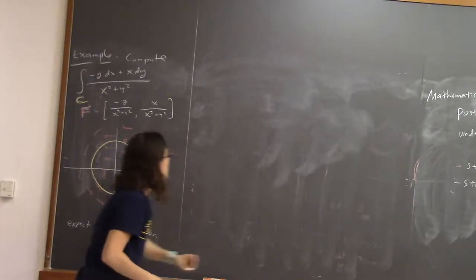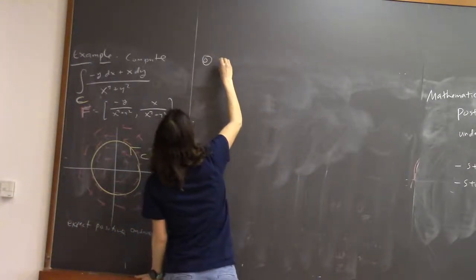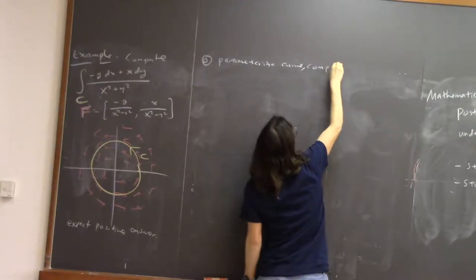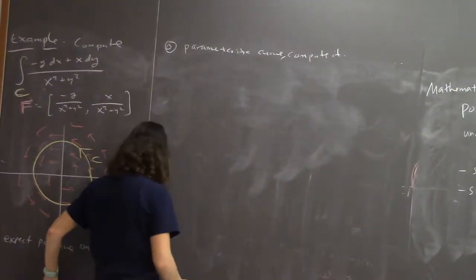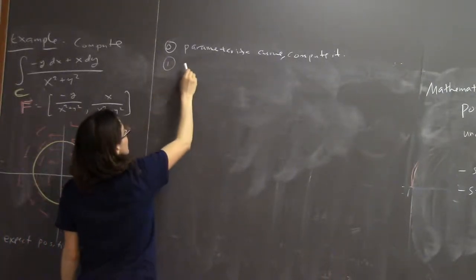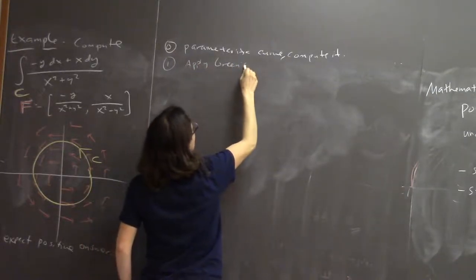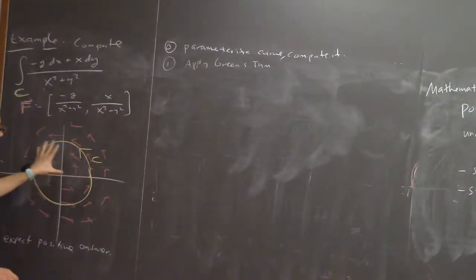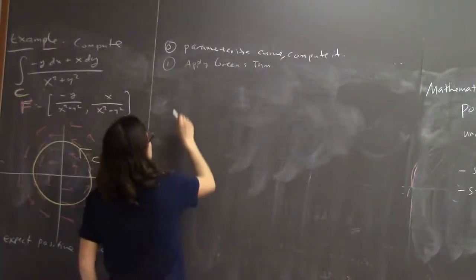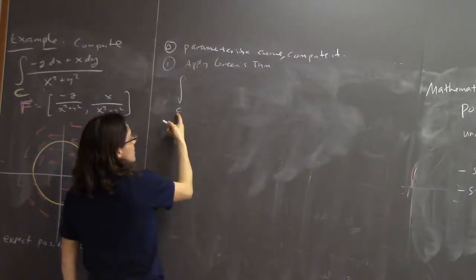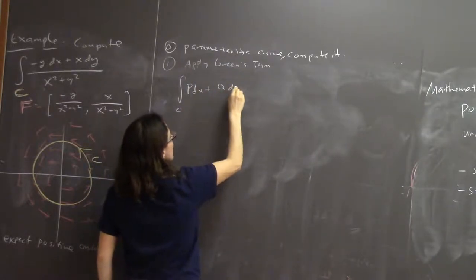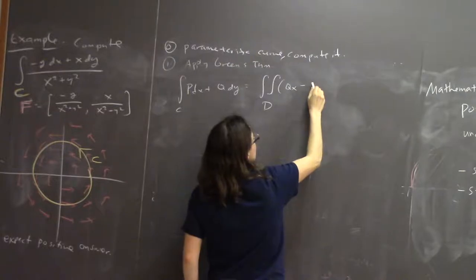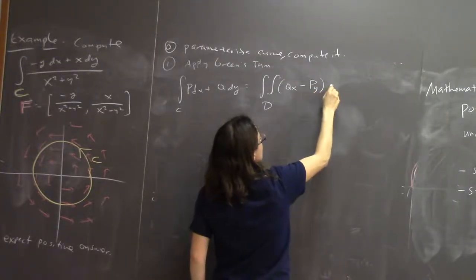One way we could do this is option zero: just parameterize the curve and compute it. But another thing you could do is apply Green's theorem. Green's theorem says that if you have an oriented curve, you can change it into an area integral over the region inside. Specifically, the line integral over curve C of p dx plus q dy equals the double integral over a region of (∂q/∂x minus ∂p/∂y) dA, where C is the boundary of D oriented so that D is on the left.